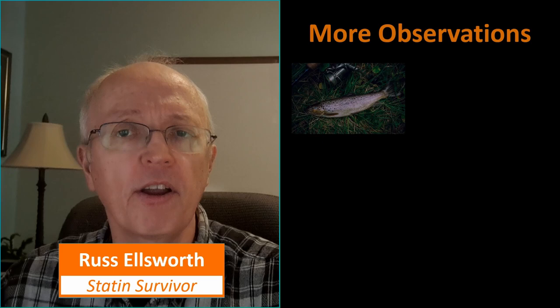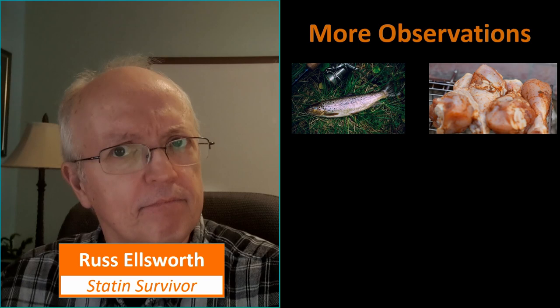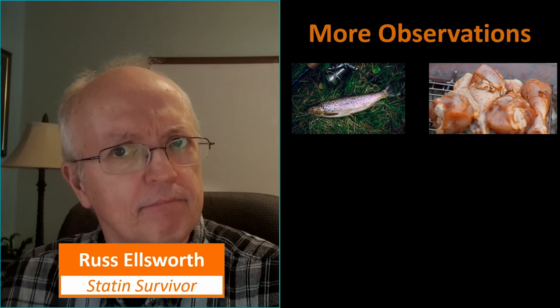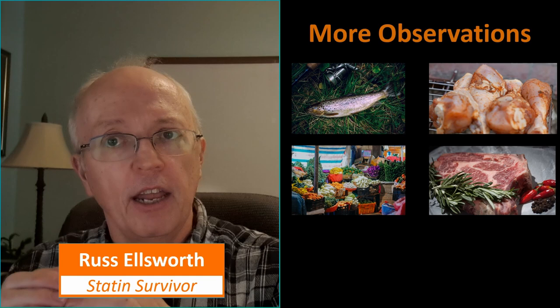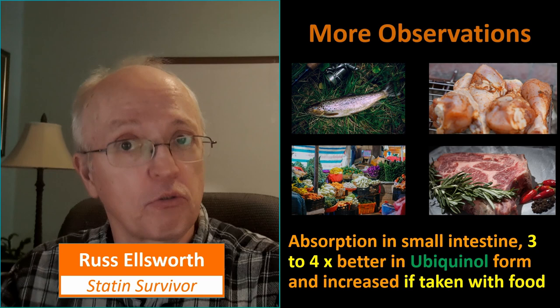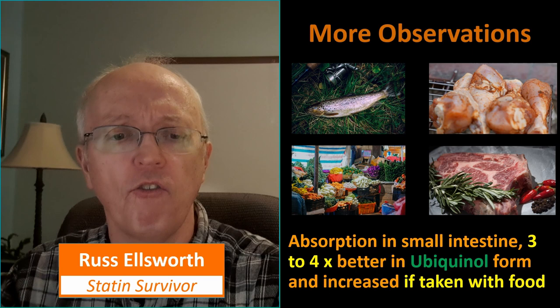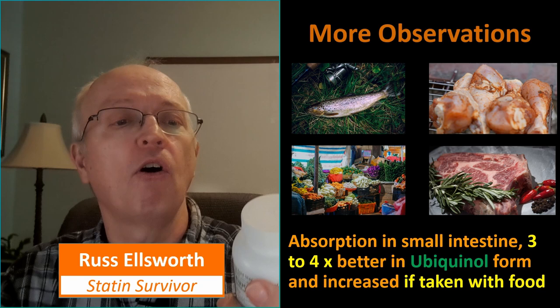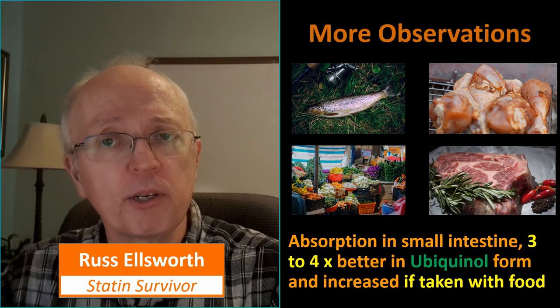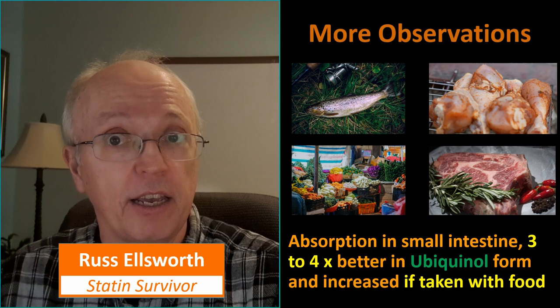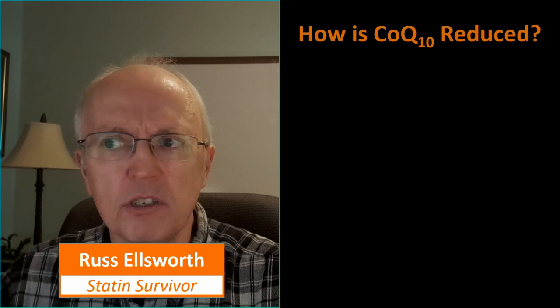Where can we get CoQ10 in our diets? Trout and herring, chicken legs — I think they really meant dark meat — vegetables and grains, lamb, pork, beef. Basically everywhere, but these are all whole foods. It is absorbed in the small intestine, three to four times better in the ubiquinol form compared to the ubiquinone form. This is not a sponsored advertisement, but I use the ubiquinol Qnol CoQ10 supplements. Absorption is also increased if taken with food. My research for this video actually taught me something — I was taking it wrong at bedtime, and now I'll be taking it with meals.